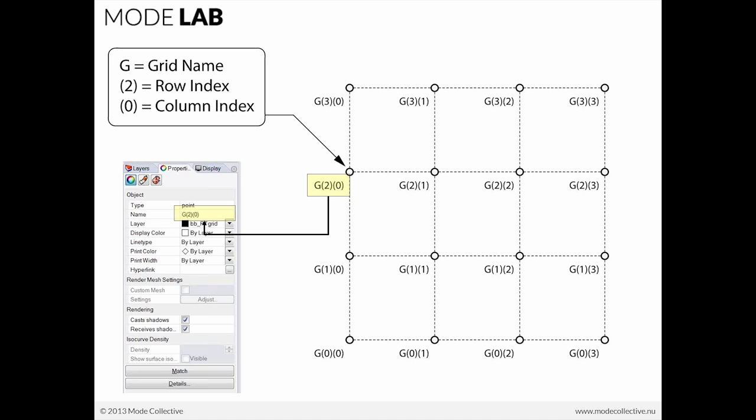The structure looks something like this: you have a grid of points, and the grid has names associated to each one of those points. Down at the bottom left you'll see 0, 0. As we move right, 0, 1. Moving up in V: 1, 0. You can see very easily how the indices are increasing as you move further away in the grid, either in U or V. In this case, G — which stands for grid, that's the stand-in name — is the grid name. The number 2 indicates where that point is in a row, and 0 indicates where that point is in a column. If you select one of those points in Rhino, you can see in its Properties that it actually has that name.